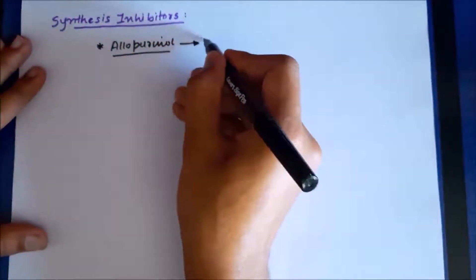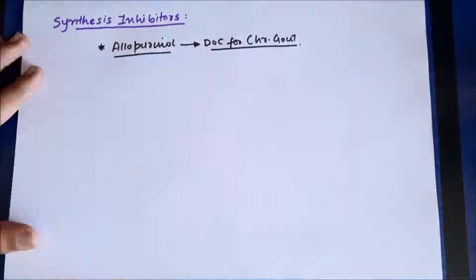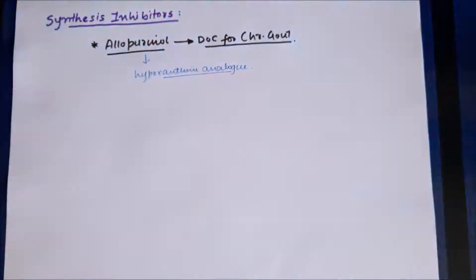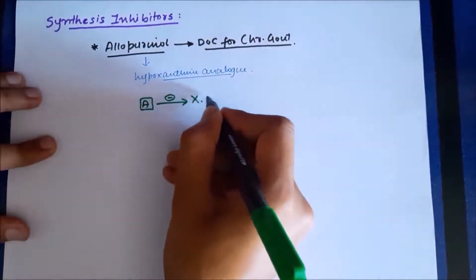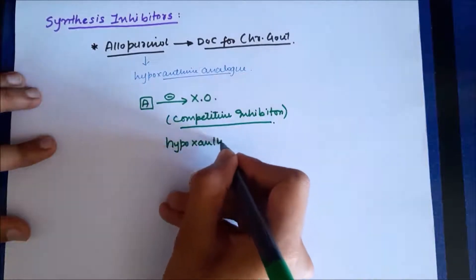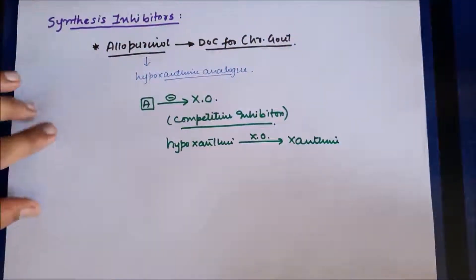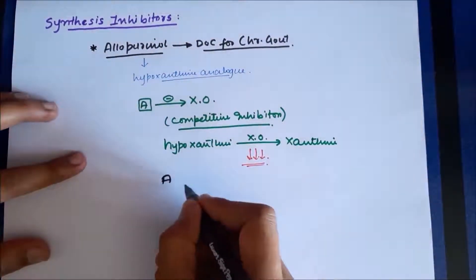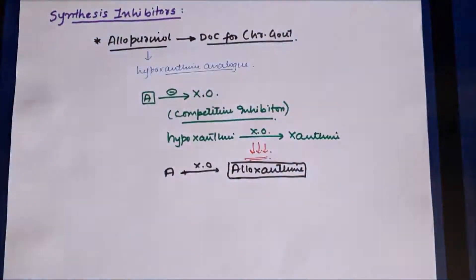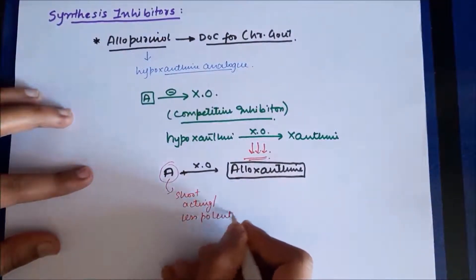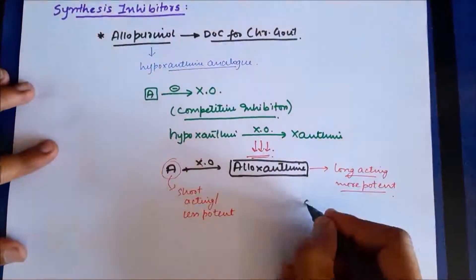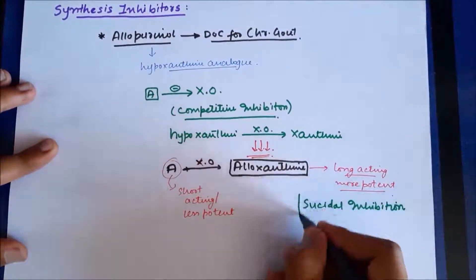The first synthesis inhibitor is allopurinol, which is the drug of choice for the treatment of chronic gout. It is a hypoxanthine analog and competitively inhibits the enzyme xanthine oxidase. Normally, hypoxanthine is converted to xanthine by xanthine oxidase; allopurinol reduces this conversion. Allopurinol itself is acted upon by xanthine oxidase and converted into alloxanthine. Allopurinol is short-acting and less potent, whereas alloxanthine is long-acting and more potent — this type of inhibition is called suicidal inhibition.